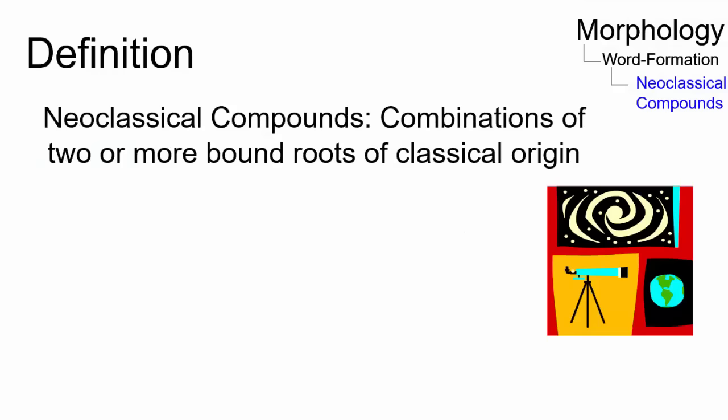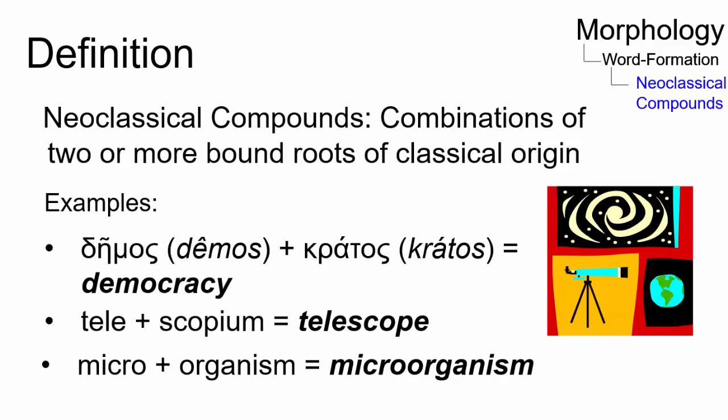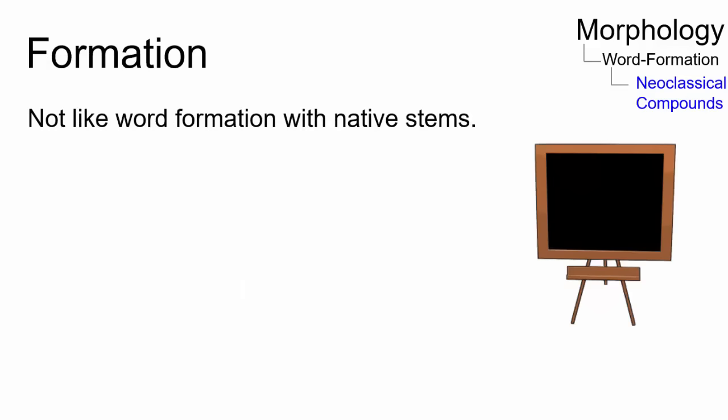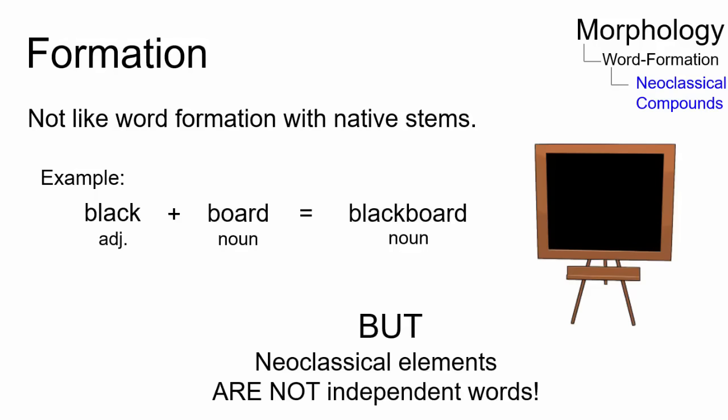Neoclassical compounds are combinations of two or more bound roots of classical origin. With the evolution of science, many Latin and Greek elements found their way into English. These combinations are formed by new mechanisms that differ from word formation with native stems, for example blackboard. Neoclassical elements behave like stems, but often they appear only as bound forms.